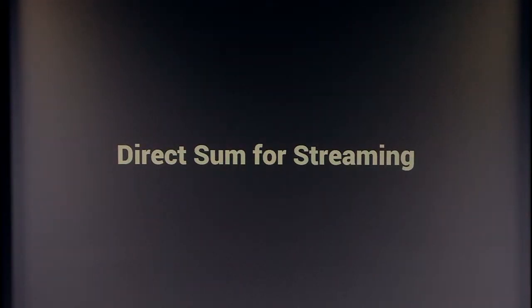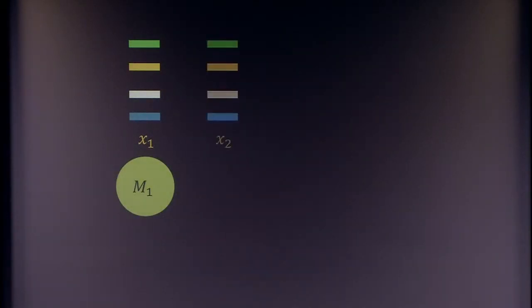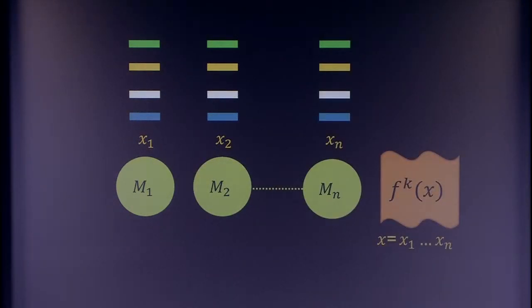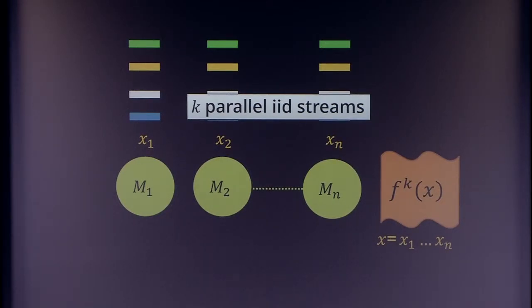Now we want to study the direct sum problem in this model. The streams come in parallel — there are k streams — and at the first time step you see the first element of each stream, and this continues until you compute the function on all streams. The question is: if these k streams are sampled independently and identically from some distribution, does computing k copies of the function require k times more memory?